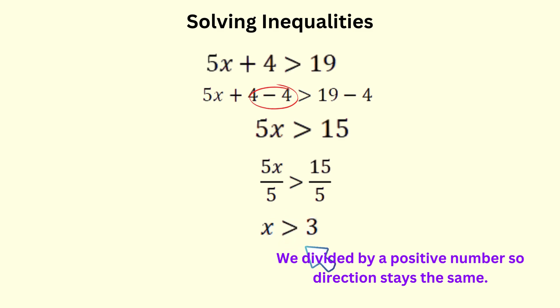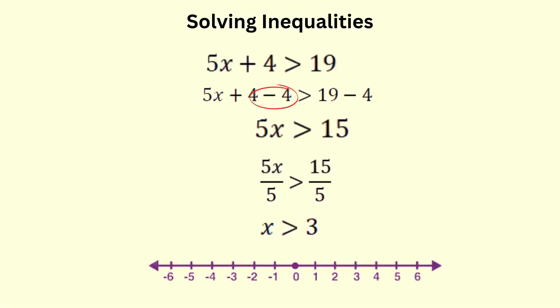This means that x can be any value that's bigger than 3. But how do we show this visually? We use a number line. For x is greater than 3, we draw an open circle at 3 and draw an arrow going right. The open circle means 3 isn't included in the solution.